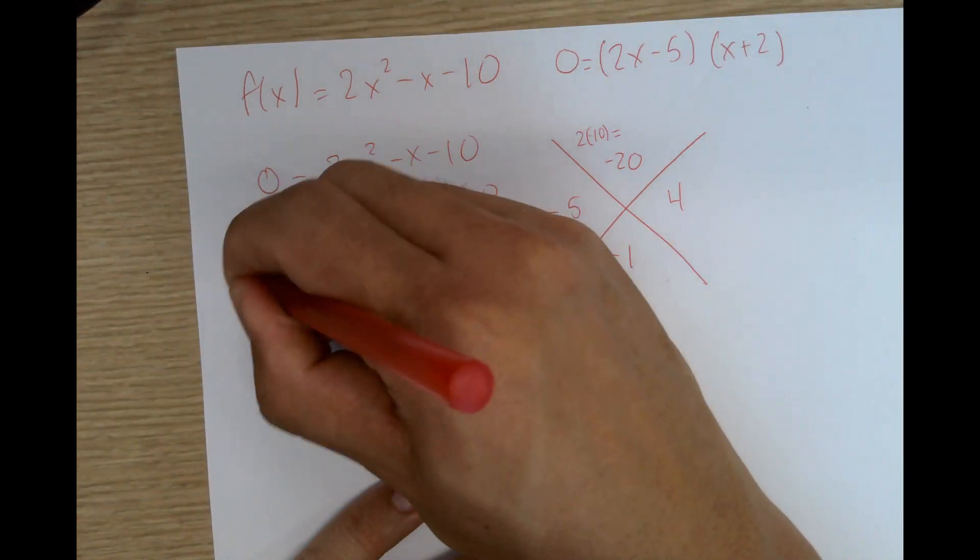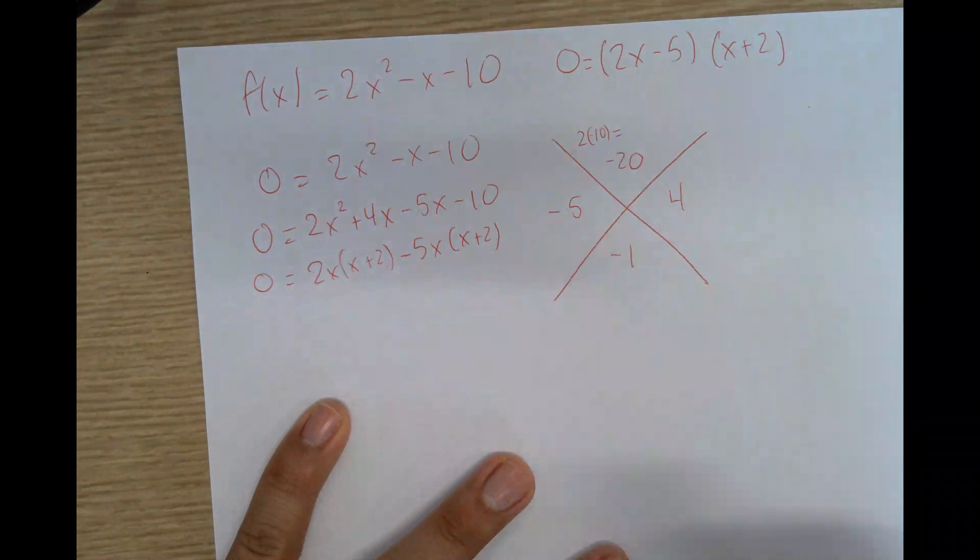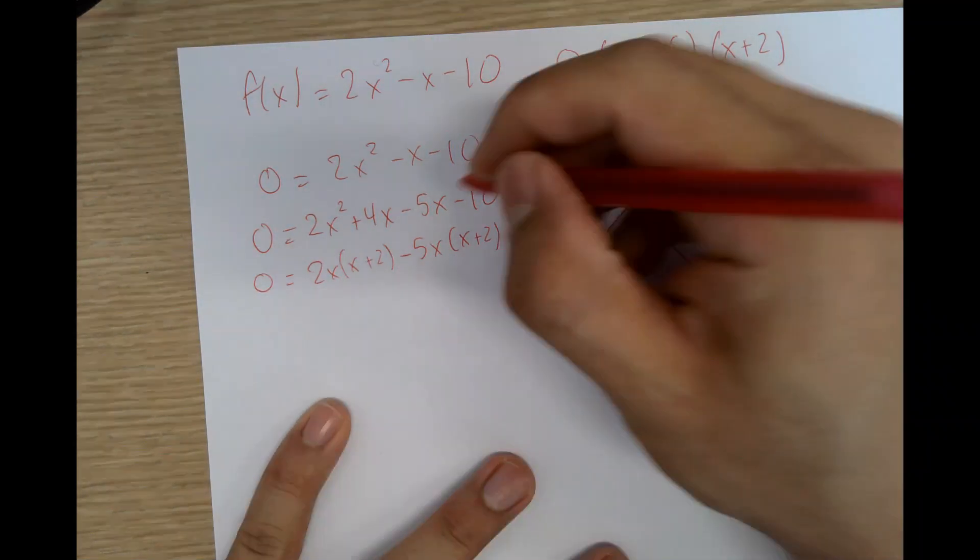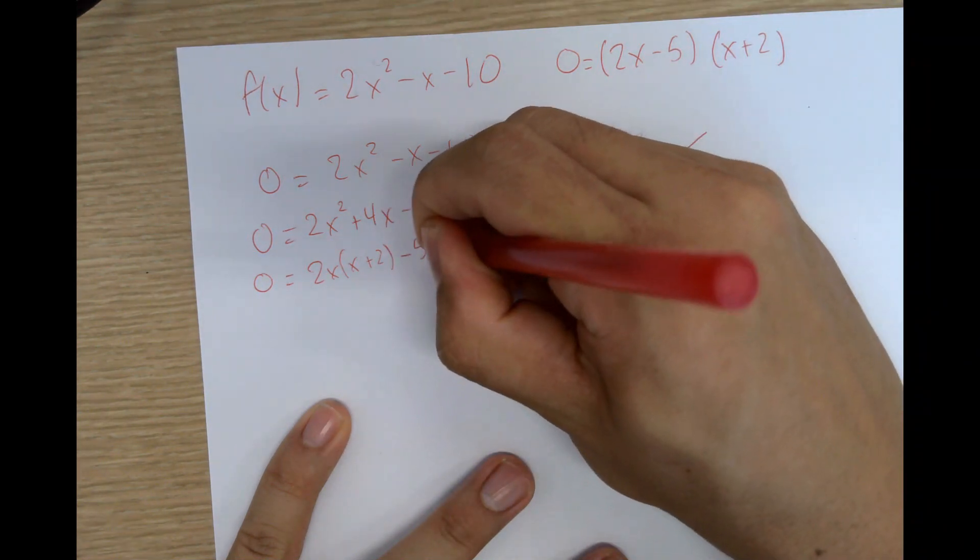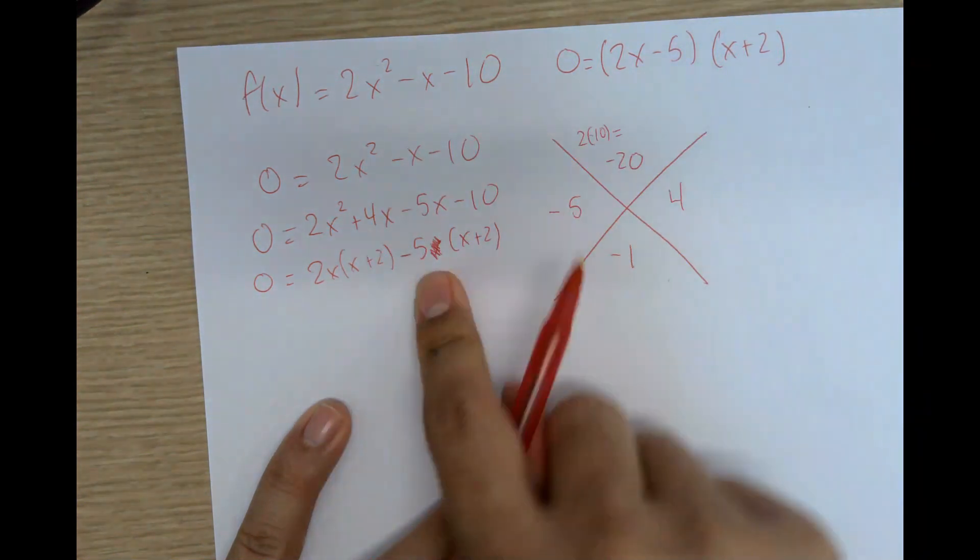But this will actually come into play next chapter. So, oh sorry, yeah, it should be -5, not -5x. Sorry, -5, not -5x.